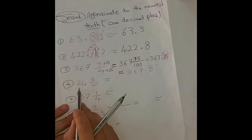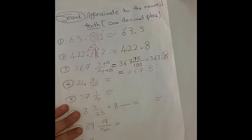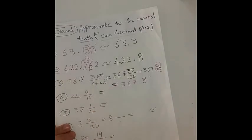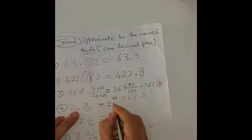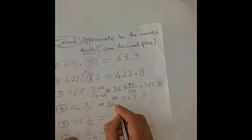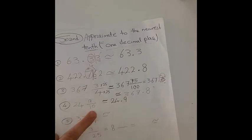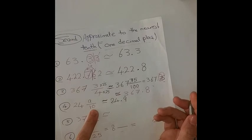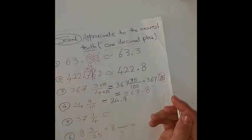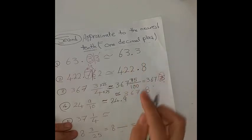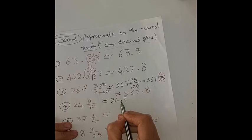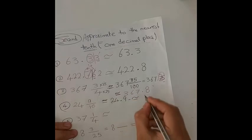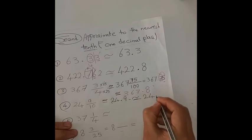Here I have another example: 24 and 9 tenths. Since the denominator is ten, I can easily convert it to decimal: 24.9. I want to approximate it to the nearest tenth — which is one decimal place. The number is already 24.9 and there are no digits after it, so it is approximately equal to 24.9.